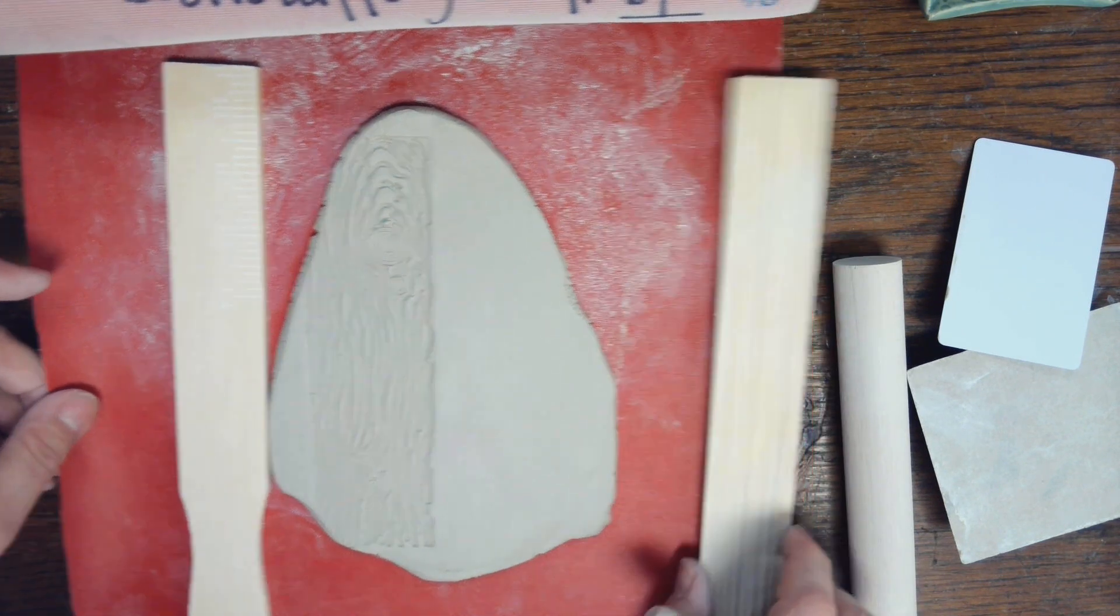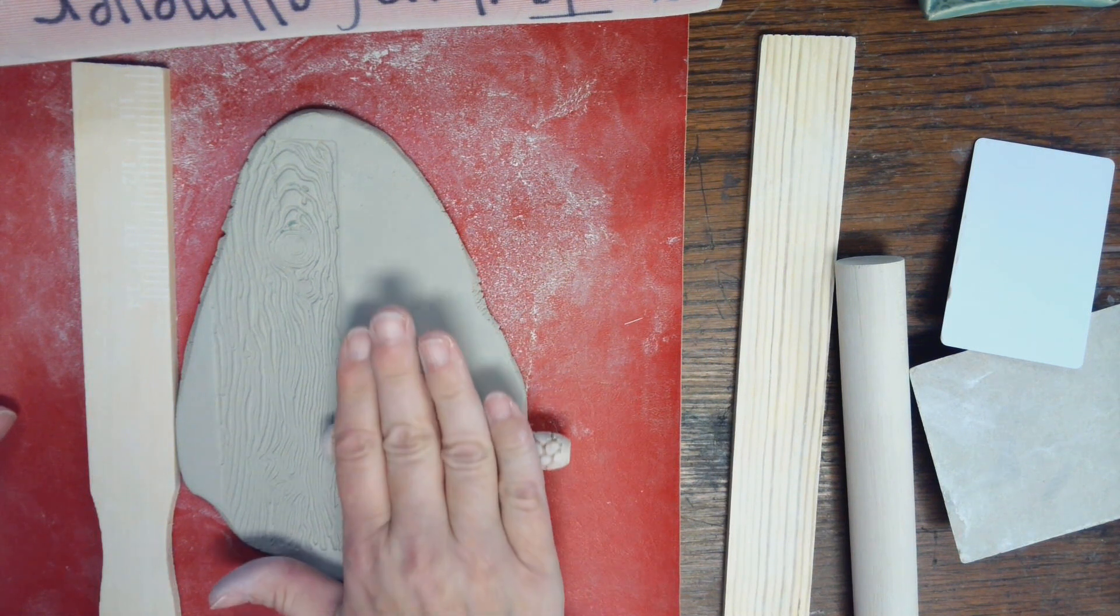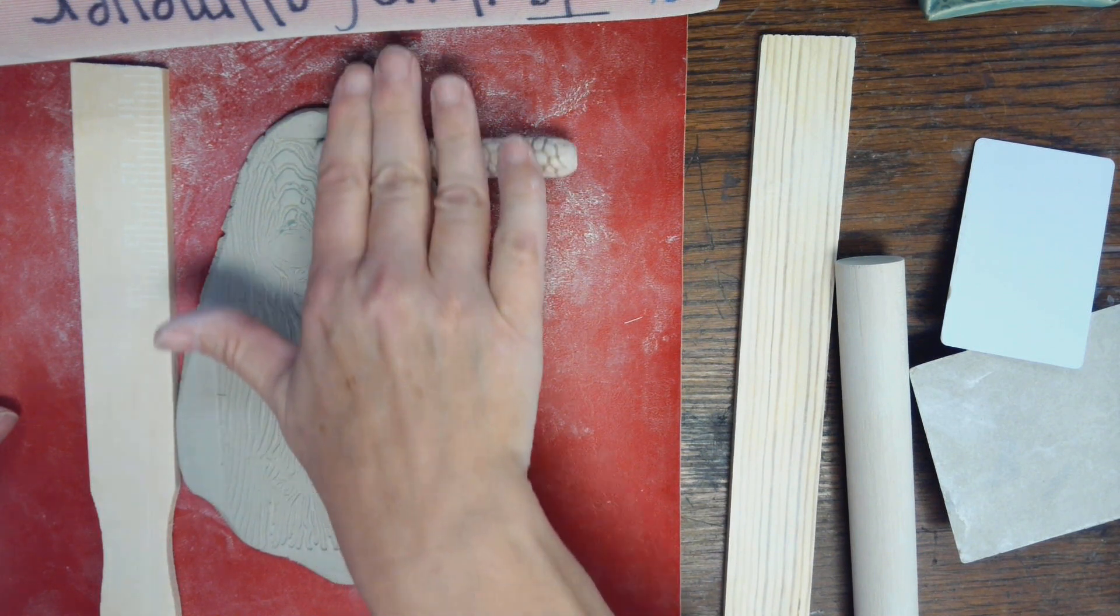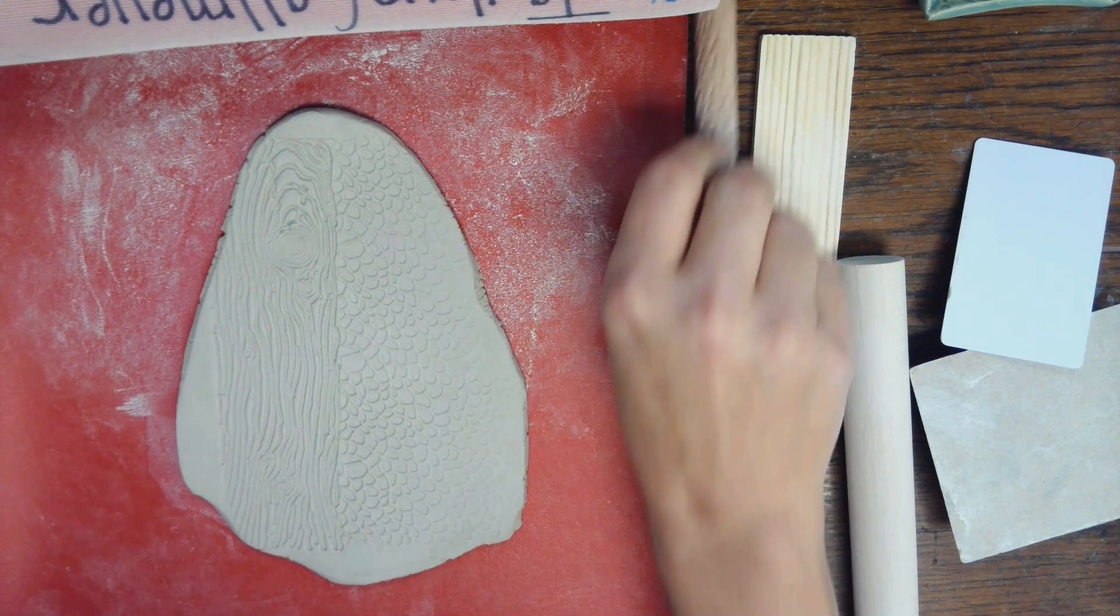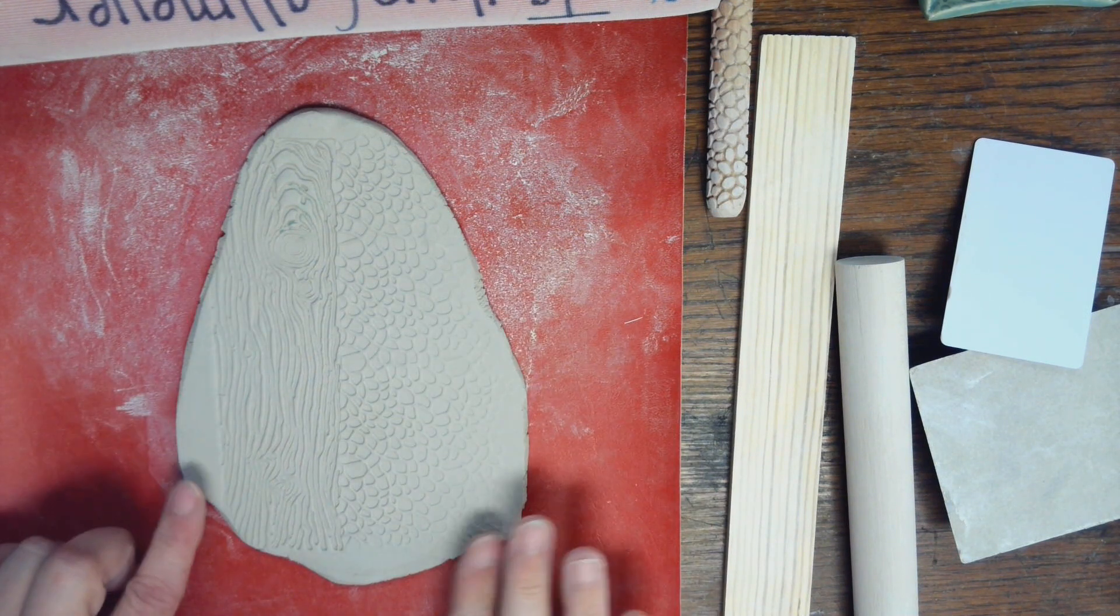On the other side, I decided to use kind of a pebbly kind of thing. So I'm just using that roller right next to it so I've got a really nice, clean texture.